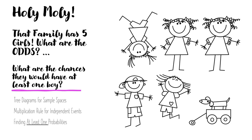I grew up near this family that had five kids and all five of them were girls. What are the chances? In this video we're gonna talk about that, constructing tree diagrams for sample spaces, the multiplication rule for independent events, and the probability of at least one.